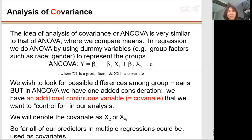The idea of analysis of covariance, or ANCOVA, is very similar to that of ANOVA, where we compare means. ANOVA is a special form that includes only categorical variables.